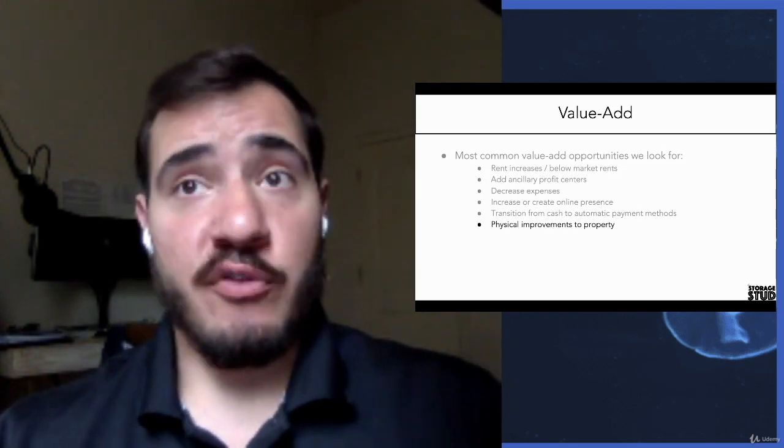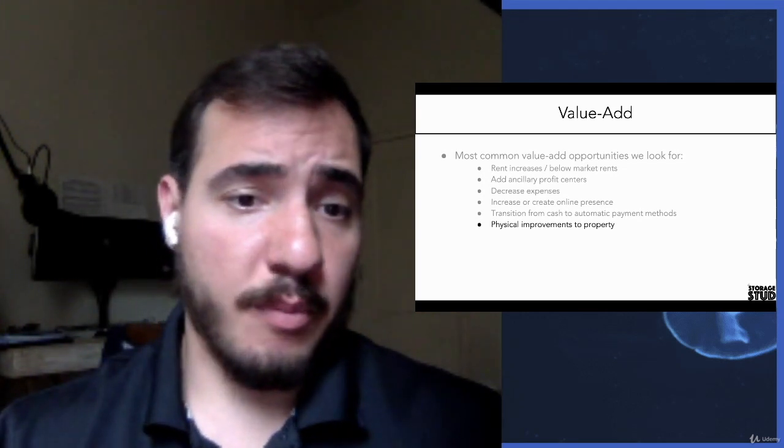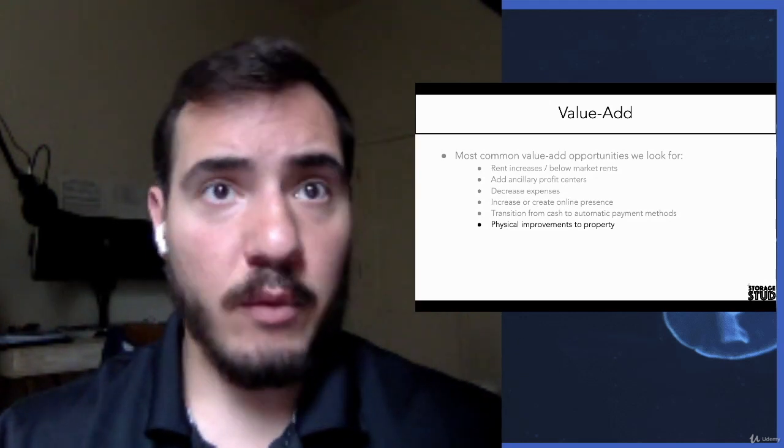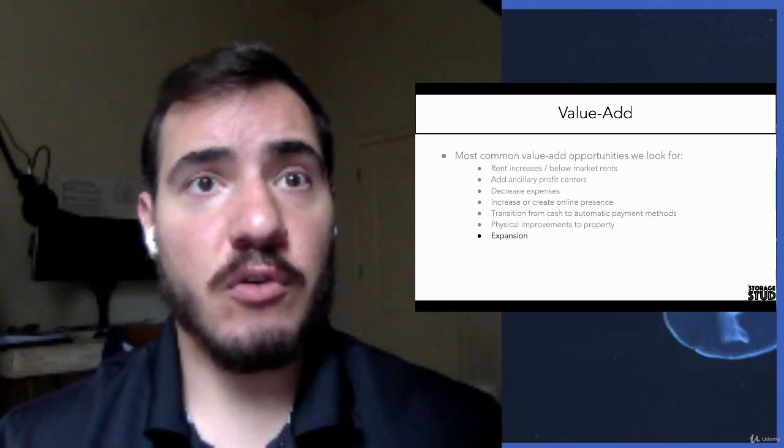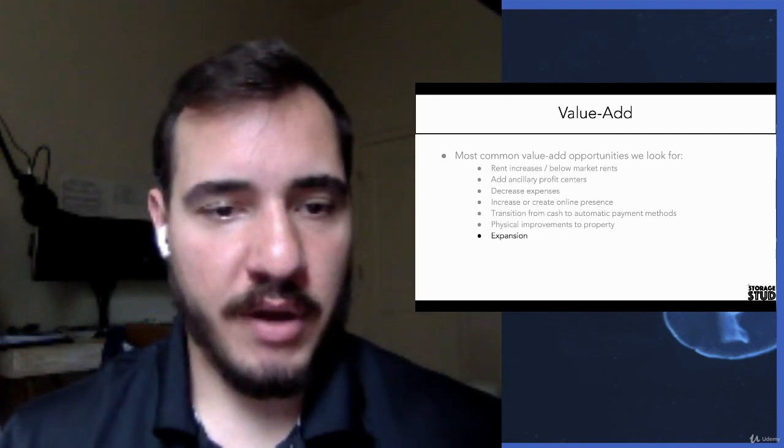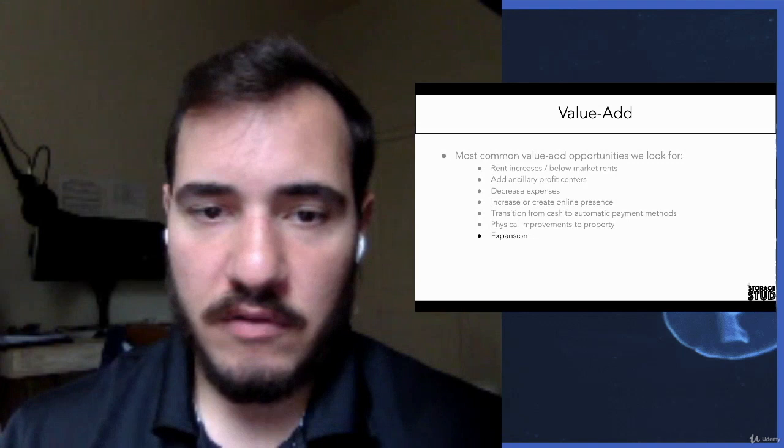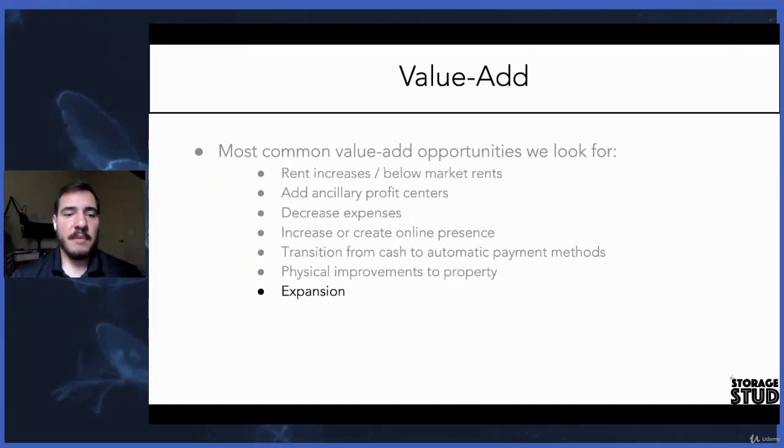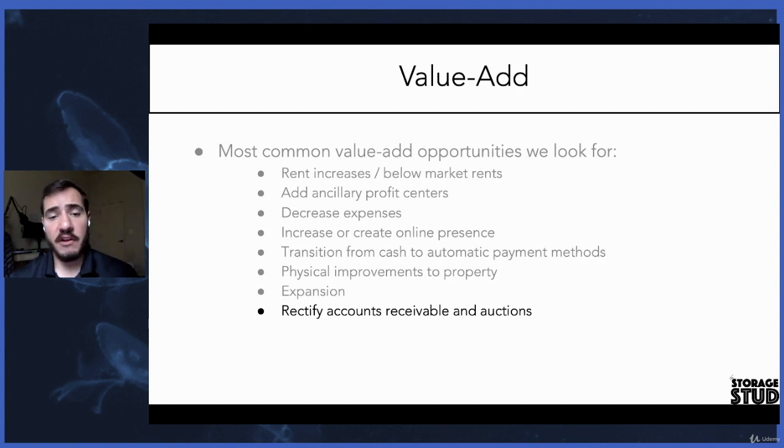We'll look at what type of physical improvements we can make to the existing property, and then we'll look at what are the potential opportunities to expand the facility. So say you've done all the things above and you're still floating at 100% occupancy - that means it's time to build more storage. And then the last thing, which is kind of like a bonus, would be to rectify your accounts receivable, conduct auctions, and monopolize the market if you have the opportunity to do so.